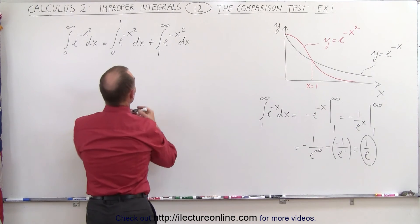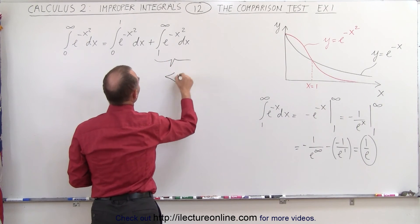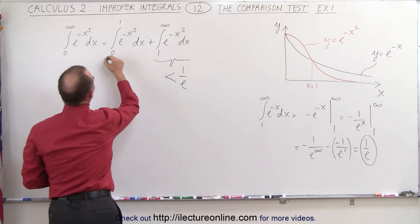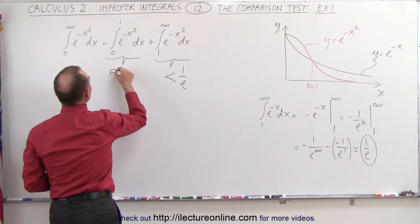That means this portion will be smaller than 1 over e. This portion here will be a finite number.